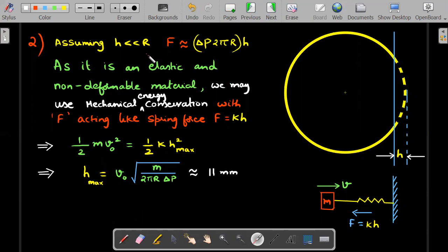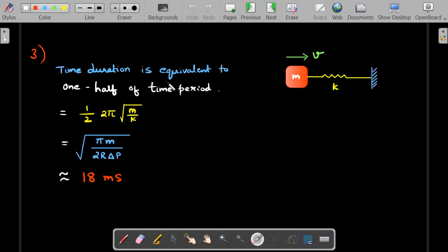In the third problem, the time duration of the collision was asked. By now, once you've got used to the fact that it acts like a spring, you start with a velocity, it compresses, then releases back and acquires this velocity. That's equivalent to one-half of a time period of a spring-block system. Using the familiar relation with k substituted from the first and second question, you end up getting approximately 18 milliseconds.